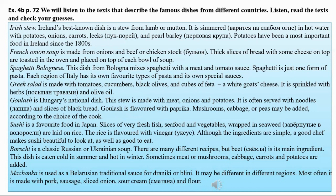Borscht is a classic Russian or Ukrainian soup. There are many different recipes, but beet is its main ingredient. This dish is eaten cold in summer and hot in winter. Sometimes meat or mushrooms, cabbage, carrots, and potatoes are added.